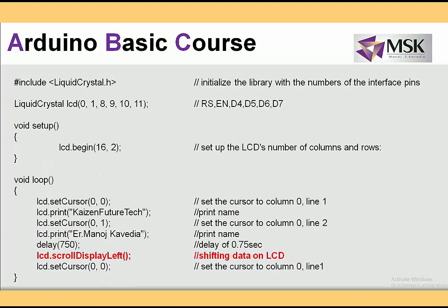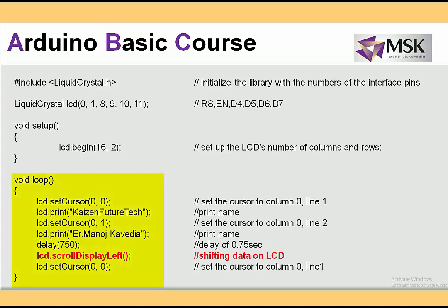Let's see how to scroll data left or right. I initialize the LCD in 4-bit mode again with 16 by 2. The cursor is set to (0, 0) and I display the message 'Kaizen Future Tech' — my startup name. Then I set the cursor to (0, 1) for the second line and print 'Er. Manoj Kavedia'. After a delay of 750 milliseconds, I call lcd.scrollDisplayLeft(), which starts shifting the data on the LCD. Using setCursor(0, 0) I can reset position and loop the scroll.